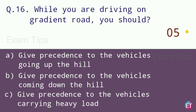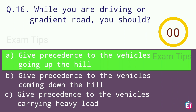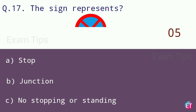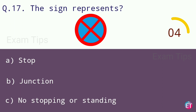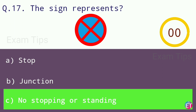While you are driving on a gradient road, you should give precedence to the vehicles going up the hill. The sign represents no stopping or standing.